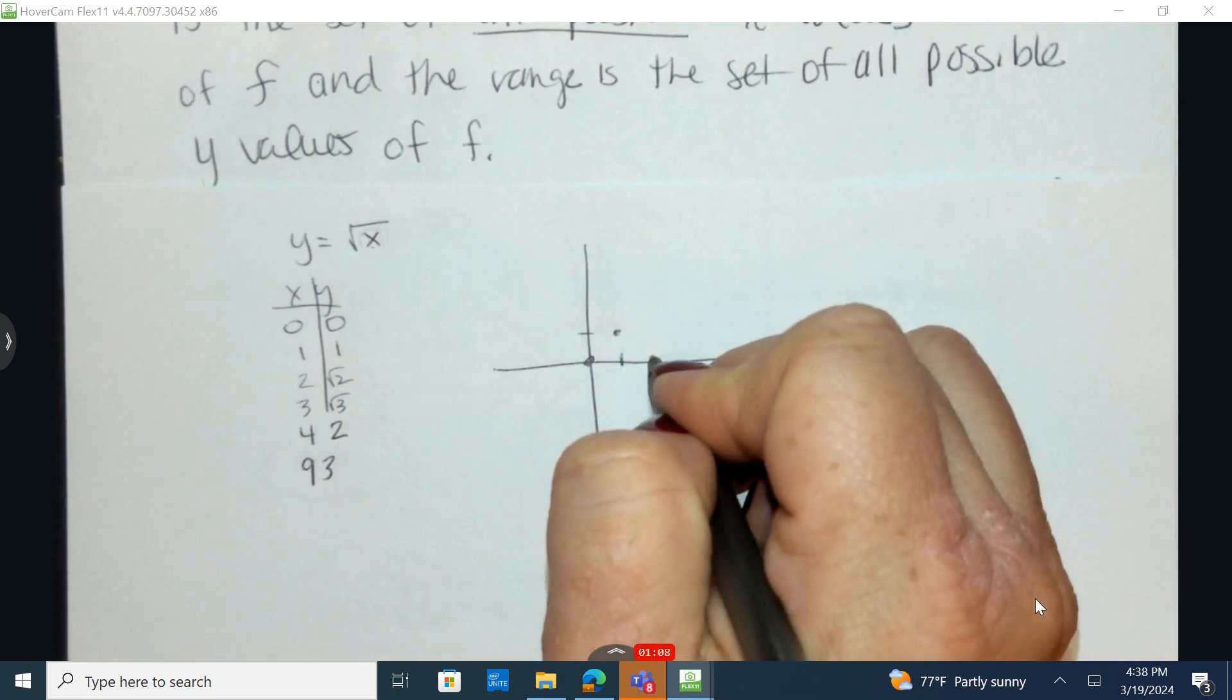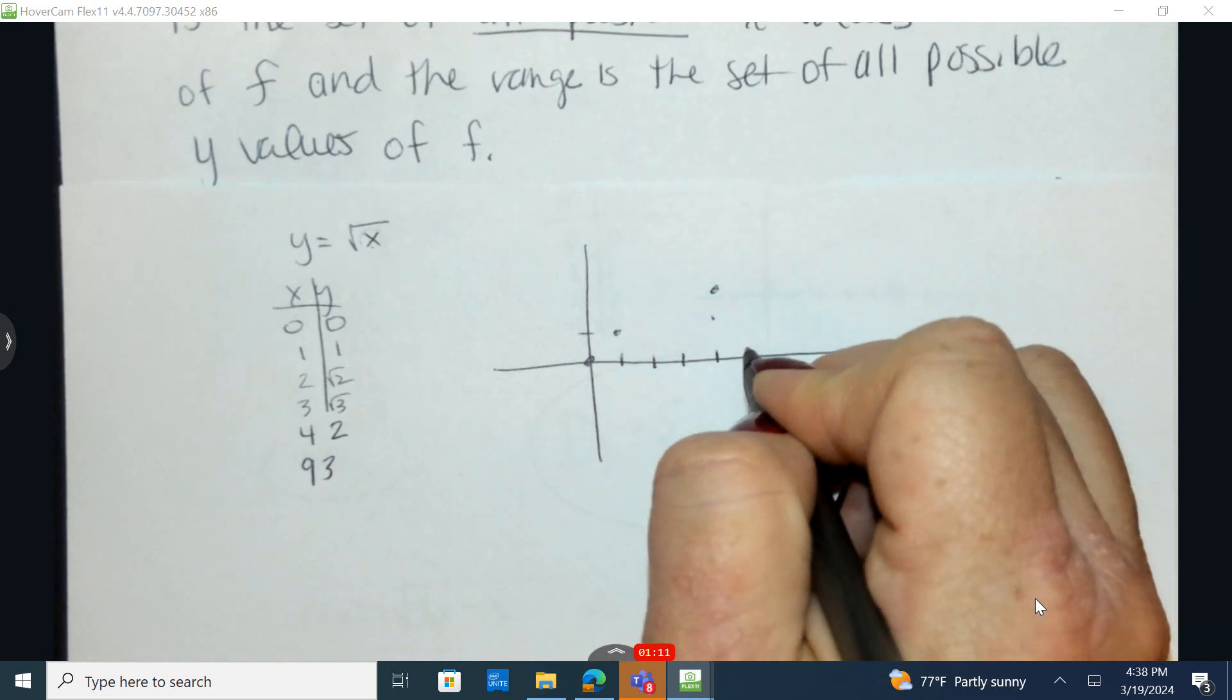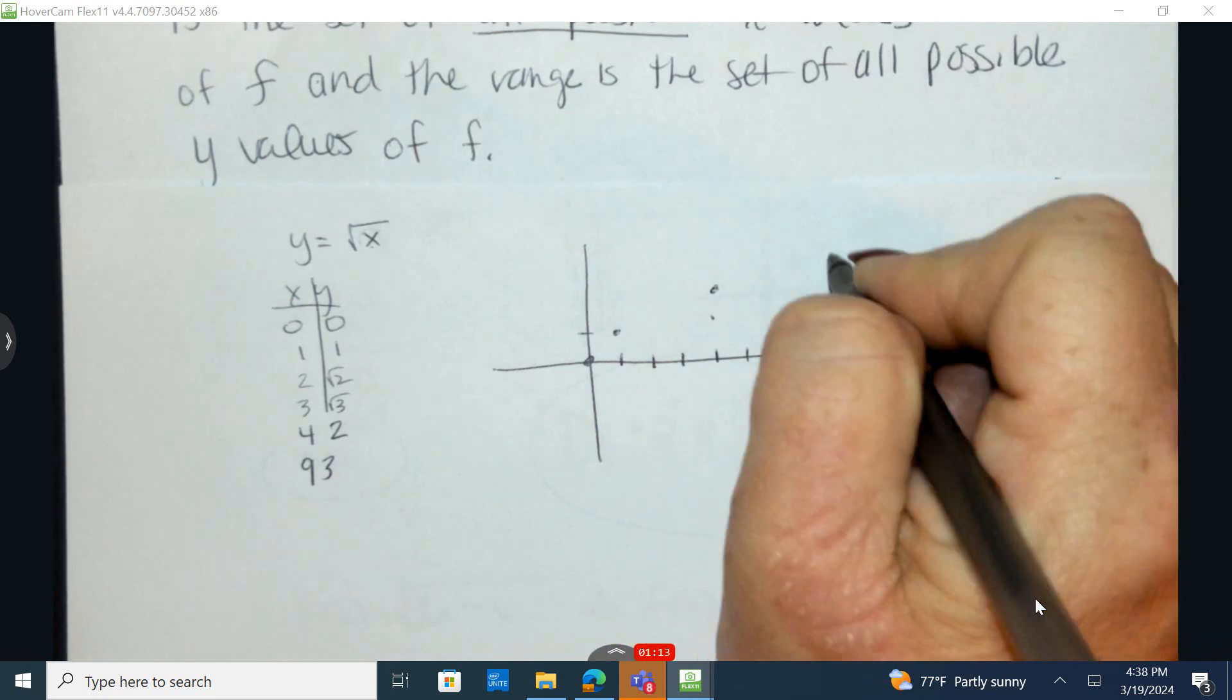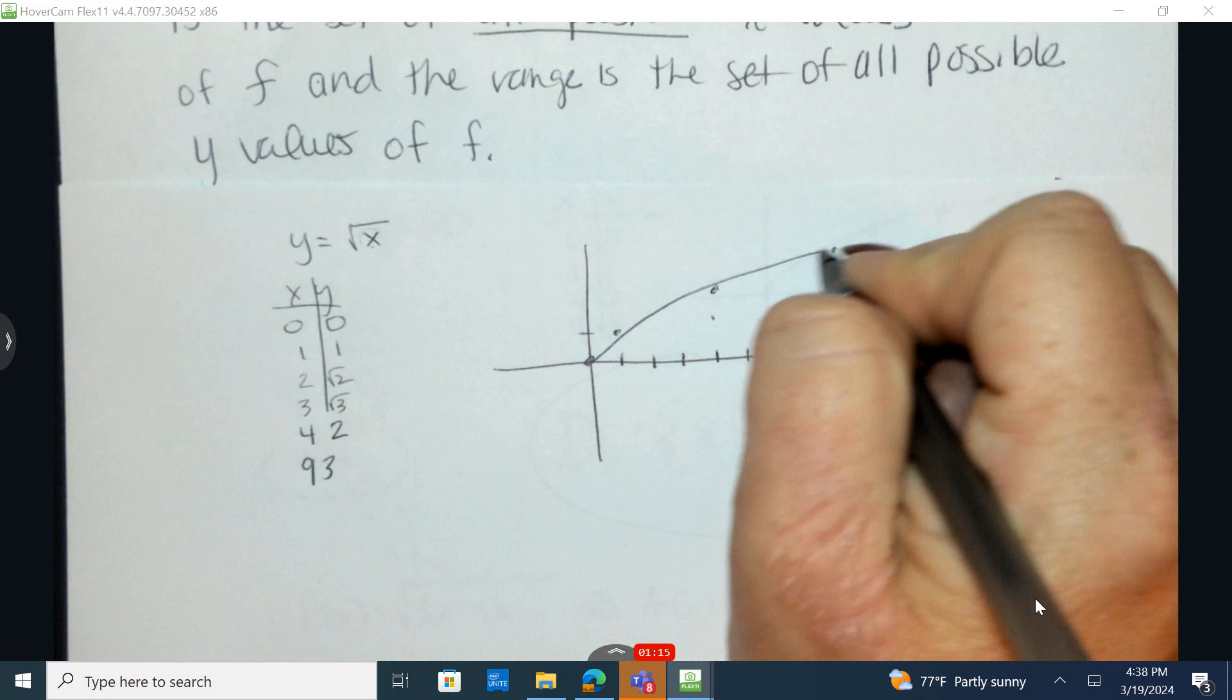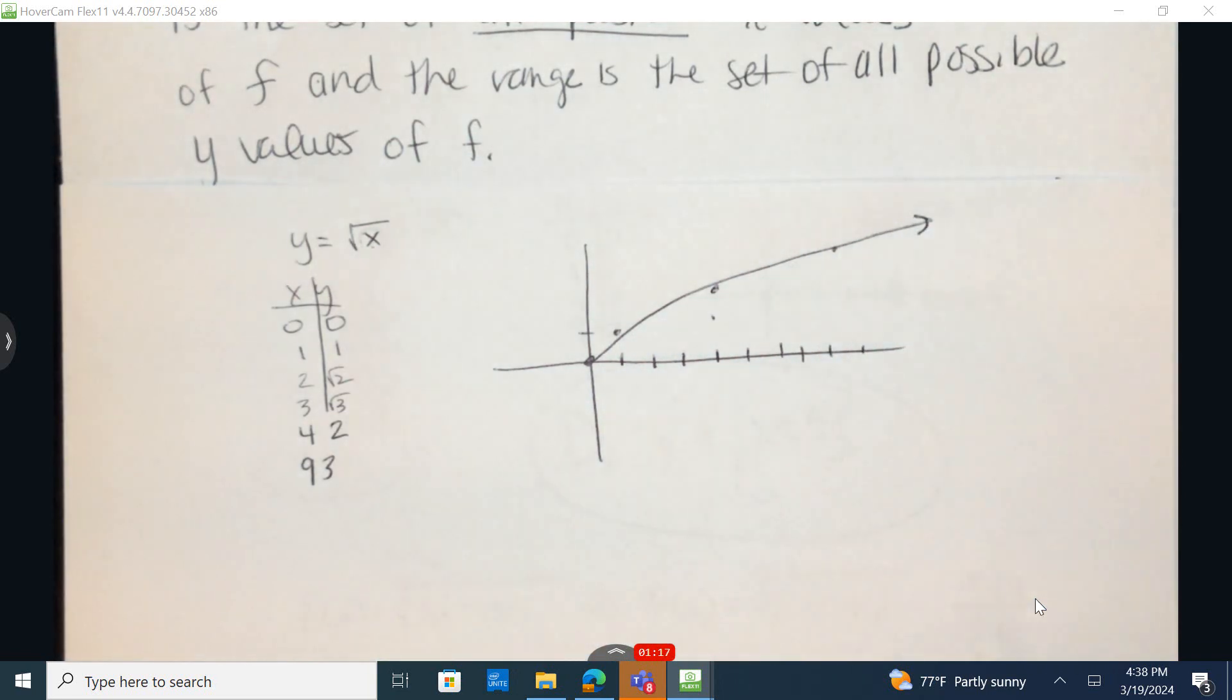Now I'm going to graph these ordered pairs: zero, zero; one, one; four, two; and nine, three. And we can see this is what our function looks like for the parent function.